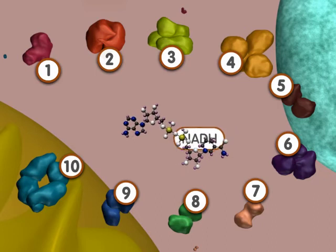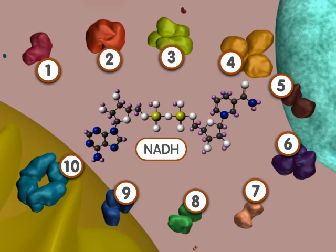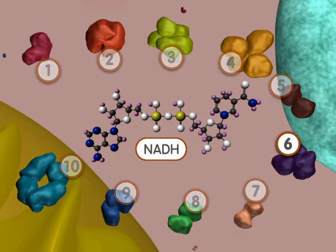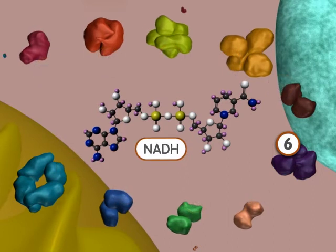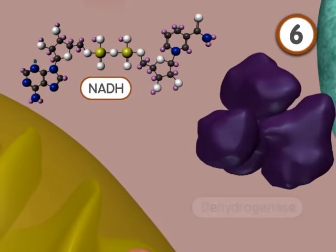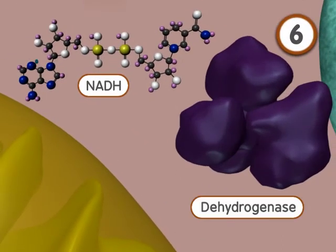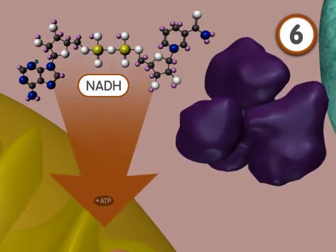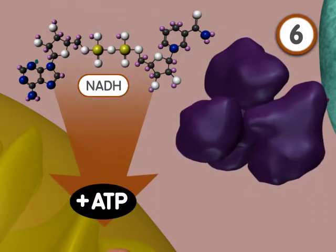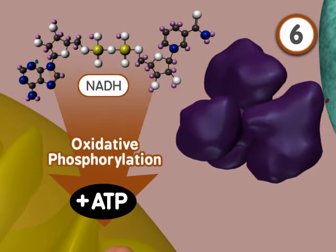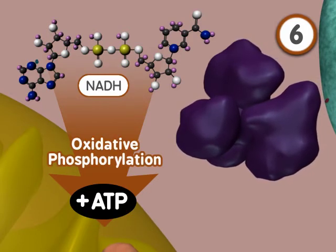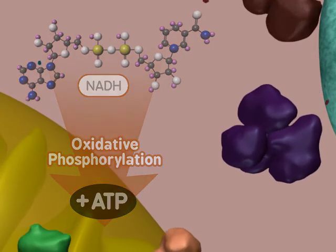There is one more key product of glycolysis to consider, called NADH. NADH is formed in the sixth reaction by an enzyme called a dehydrogenase. NADH is an electron carrier with the potential to produce more ATPs through a process called oxidative phosphorylation. Details of that process are shown in a separate animation.